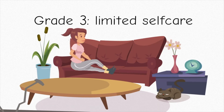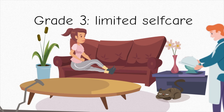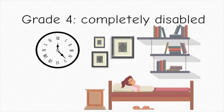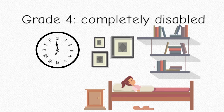Grade 3 means you're capable of only a limited amount of self-care, and you're typically confined to a bed or chair more than 50% of your waking hours. Grade 4 means you're completely disabled and you're totally confined to a bed or chair.